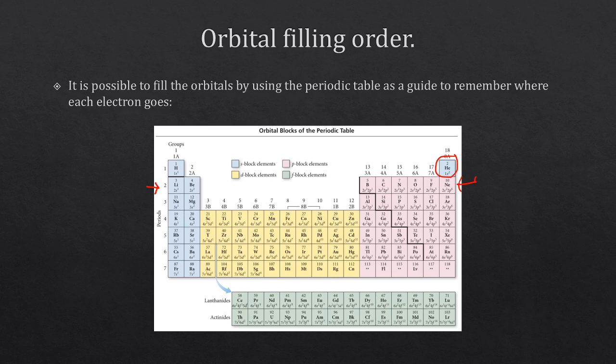Every time you add an electron you can understand it as being added to one of four color-coded groups. The s-block elements are at the beginning. Helium is the one exception. The first two — hydrogen gets 1s1, helium gets 1s2. When you get to the second row, lithium's third electron goes into the 2s orbital because it's now in period 2. Going down, sodium has an electron in 3s, potassium is 4s1, rubidium is 5s1, cesium is 6s1, francium is 7s1.